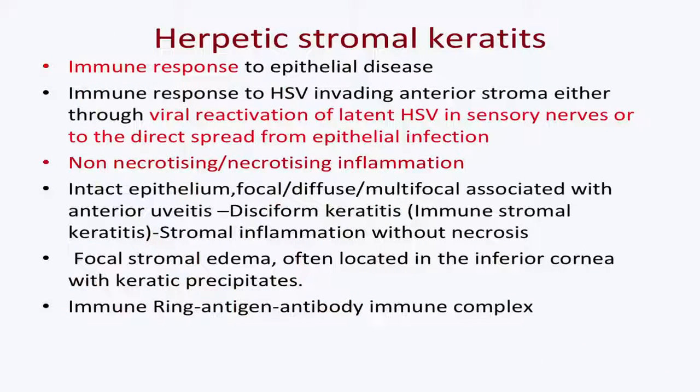We then have to define whether we are dealing with stromal keratitis. Stromal keratitis may primarily be a non-necrotizing or necrotizing kind of inflammation. It is also an immune response to the epithelial disease or the virus present in the stroma. Non-necrotizing inflammation has an intact epithelium and presents as disciform keratitis — familiar to all of us. It may be focal, diffuse, or multifocal. That's why viral keratitis masquerades are also commonly seen. It may present as anterior uveitis. Disciform keratitis is primarily an immune stromal keratitis — stromal inflammation without necrosis.